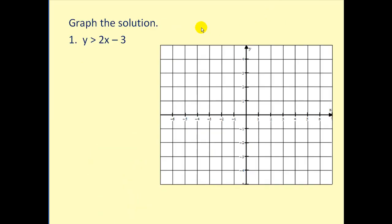Let's go ahead and give it a try. Let's graph the solution to y > 2x - 3. So step one, we are going to graph the line y = 2x - 3. But it will be a dashed line because y is not equal to 2x - 3. It's only greater than.